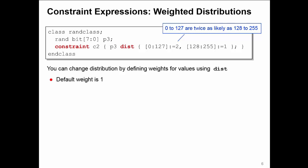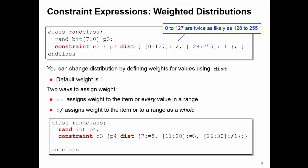Now there's two ways of assigning weights inside of a dist constraint. The first one, colon equals, assigns the weight to the individual item or every single value in a range.